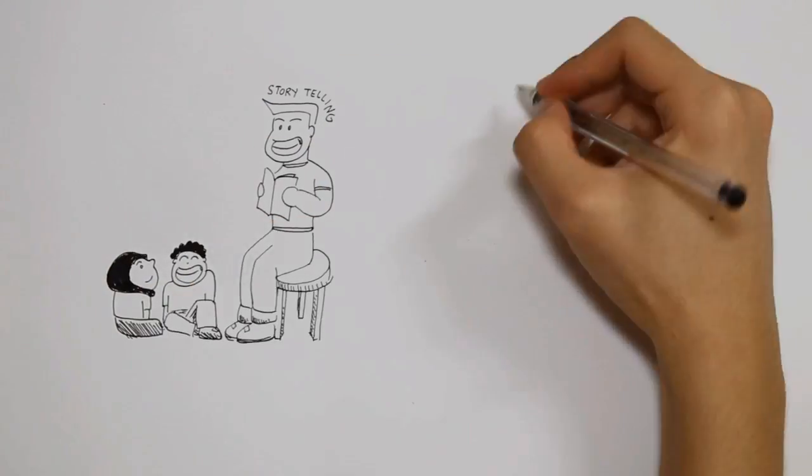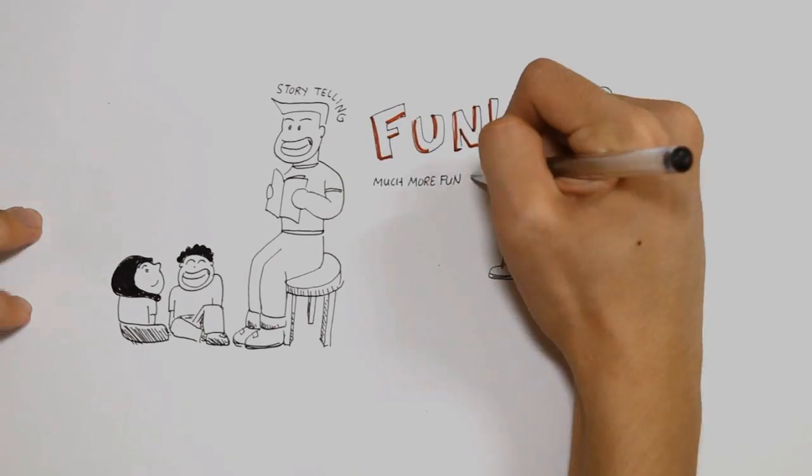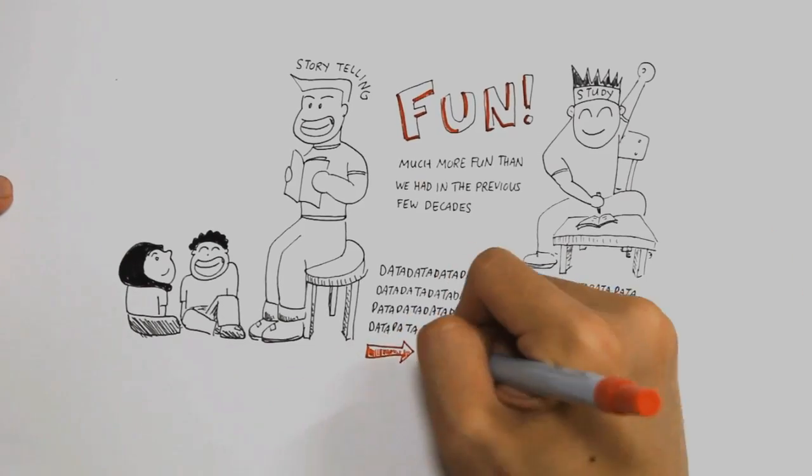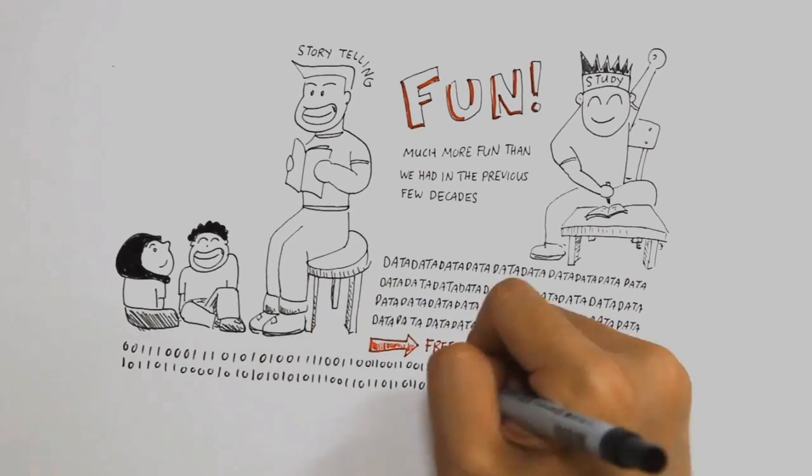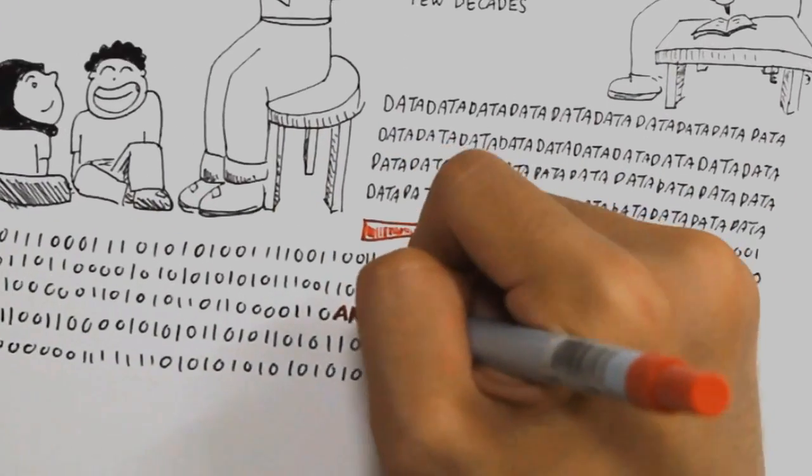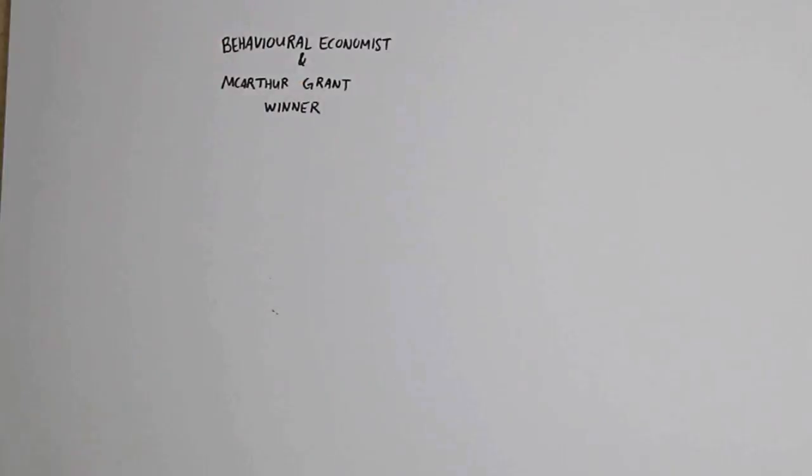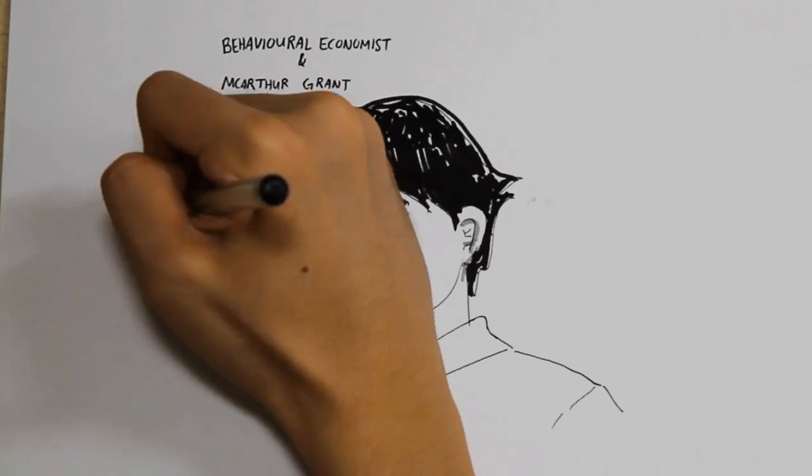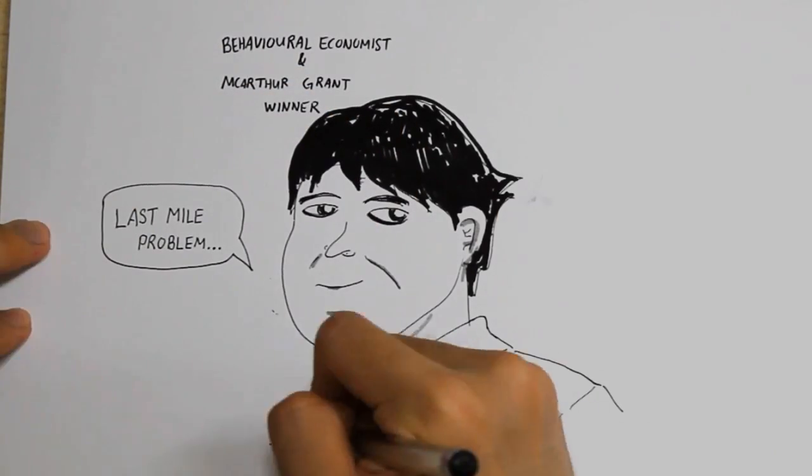And now for the third reason, we're going to have lots of fun storytelling and studying. Much more fun than we had in the previous few decades. You see, there is data everywhere in the net, and there are lessons freely available online. To be short, you can find almost anything online these days. But as behavioral economist and MacArthur Grand winner, Sentil Moulayna, then points out, there's this last mile problem. What's this last mile problem?